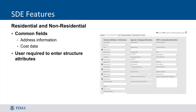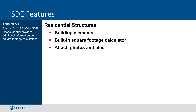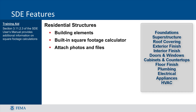Another feature of the SDE tool is that it allows the user to perform assessments on both residential and non-residential structures. Much of the information that needs to be collected, such as structure attributes, must be entered whether you are performing a residential or non-residential assessment. There are some differences between performing a residential and non-residential assessment, which will be covered in more detail in a later module. However, there are some key elements you should know about each type before proceeding. Evaluations of residential structures are based on performing an assessment of 12 different building elements, including the structure's foundation, superstructure, and roofing.